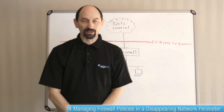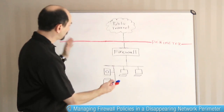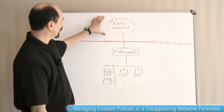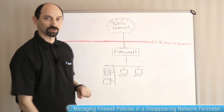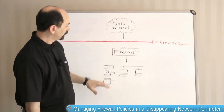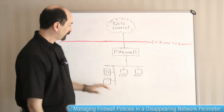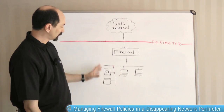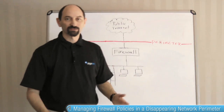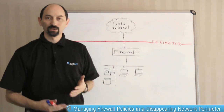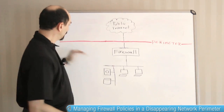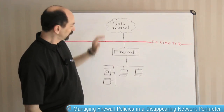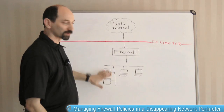What do I mean by that? Well, here's a picture of the way we used to think about firewalls. We have our outside public internet, then we have our firewall, and then we have our internal network with our desktops, our servers, and our databases. It's very clear where the network perimeter is — it separates the outside world from our internal networks.